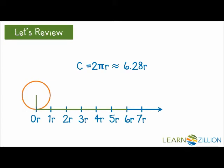You already know that the circumference of a circle is 2 pi times the radius, or approximately 6.28 times the radius. Here's a circle and a number line marked in radii. We roll the circle down the number line, and when it's gone all the way around one full rotation, it ends up right there at 2 pi r.